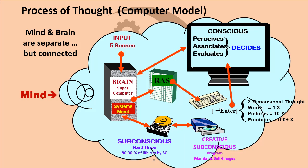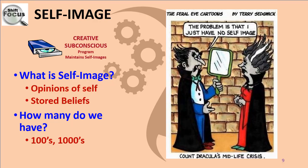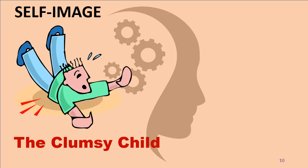Eighty to ninety percent of our life is run by the subconscious, so we don't think about all of these things consciously. As we home in on the self-image, remember that the creative subconscious is trying to maintain our self-images. These self-images are just our opinions of ourselves — our stored beliefs about ourselves — and we have hundreds, maybe even thousands of them. I often use the example of the clumsy child to give a better idea of self-image and how we develop these.